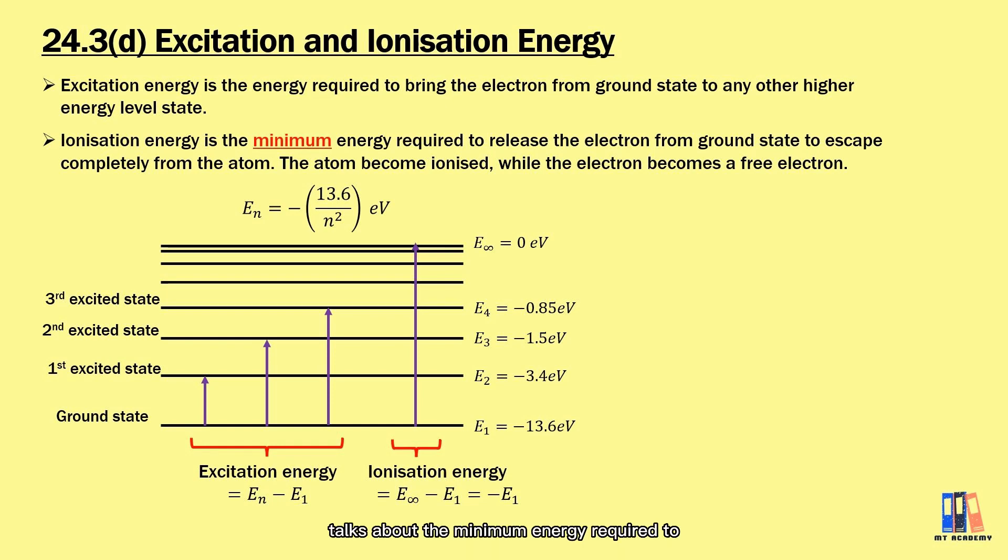So there is something you can note here. Ionization energy talks about the minimum energy required to free the electron, which is something similar to the work function that we have discussed in the previous topic. They are quite similar except that they are used for different situations. Work function refers to the energy required to release the electron in the metal, but for ionization energy it is to release the electron from an atom. So here we also can supply more energy than the ionization energy to the electron, that the remaining energy will become the kinetic energy of the free electron.